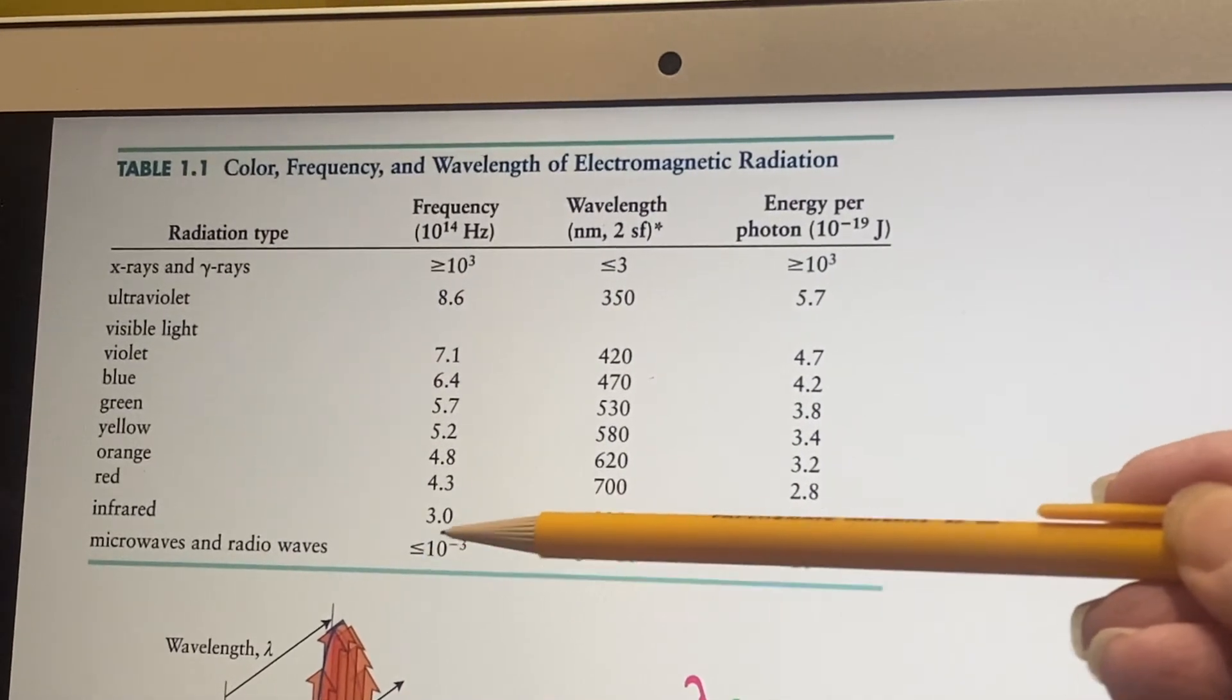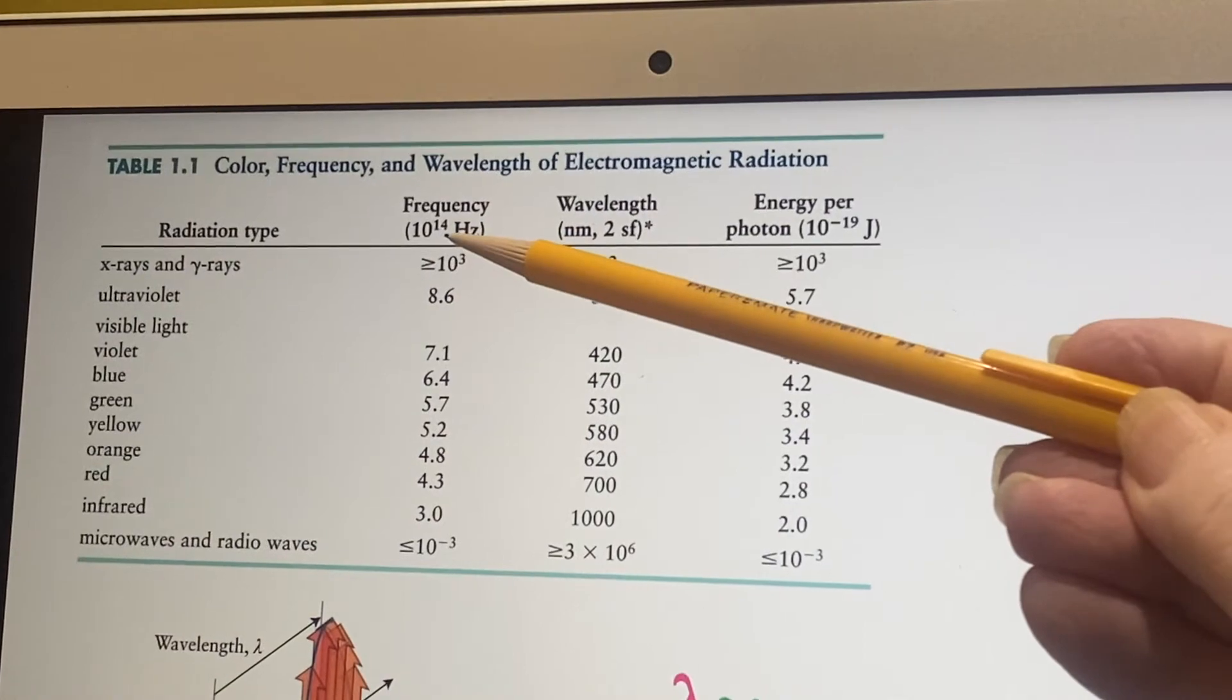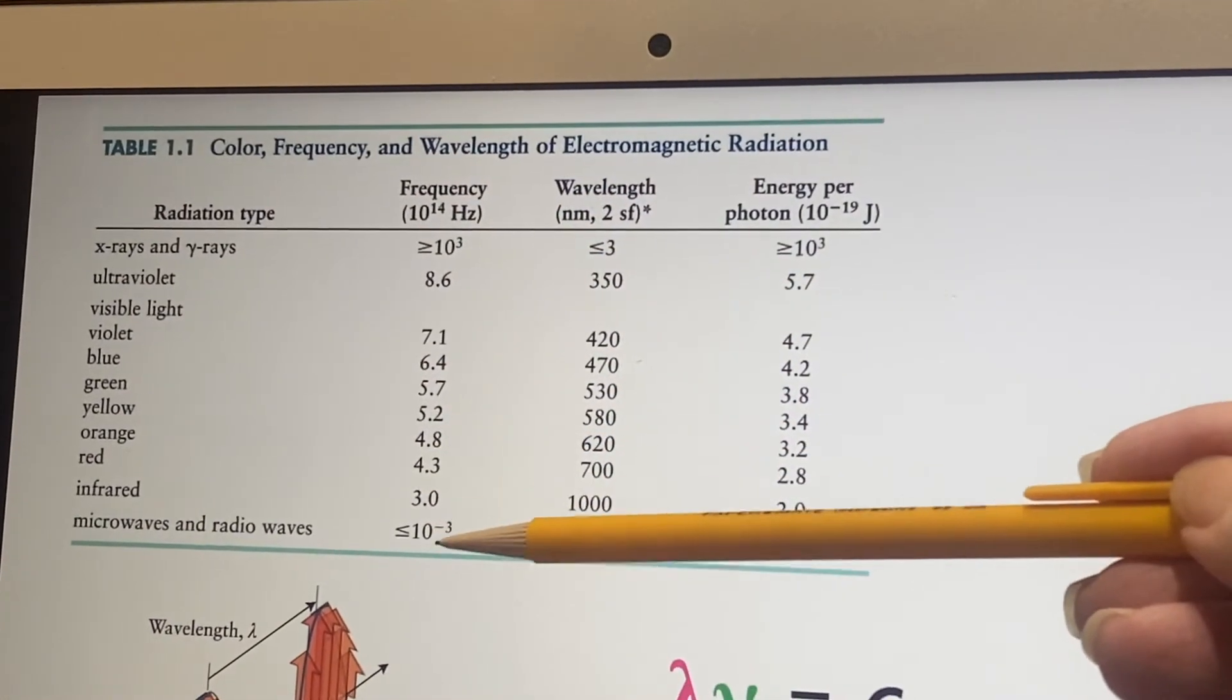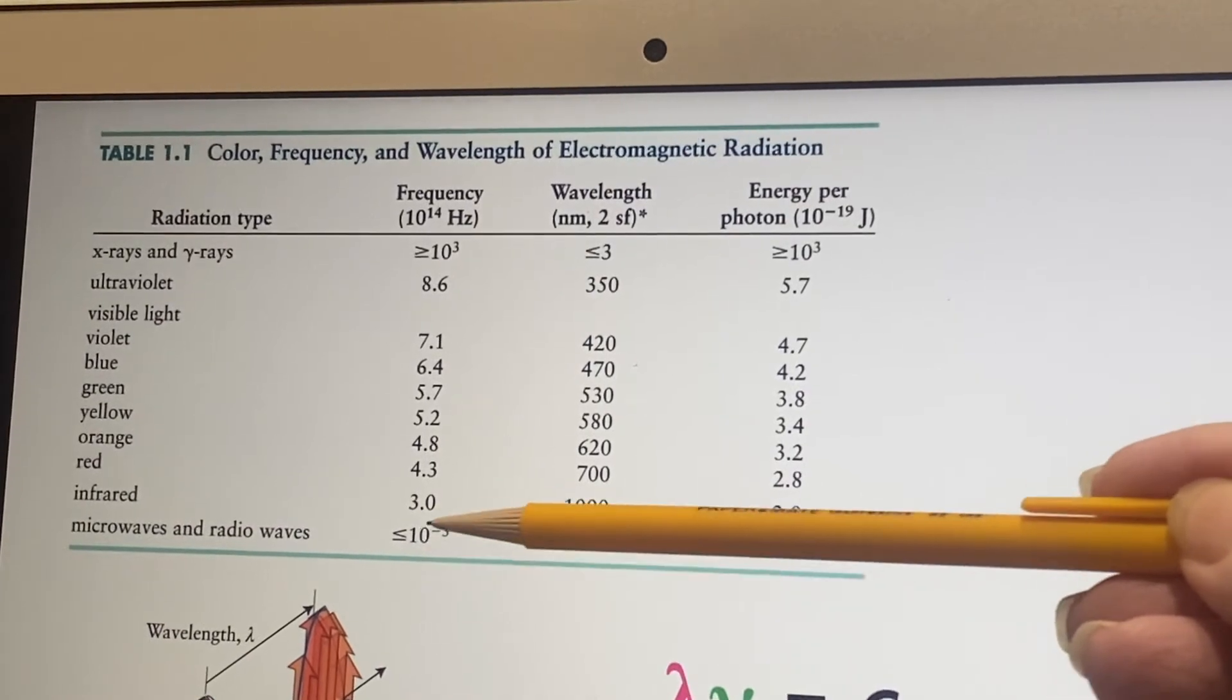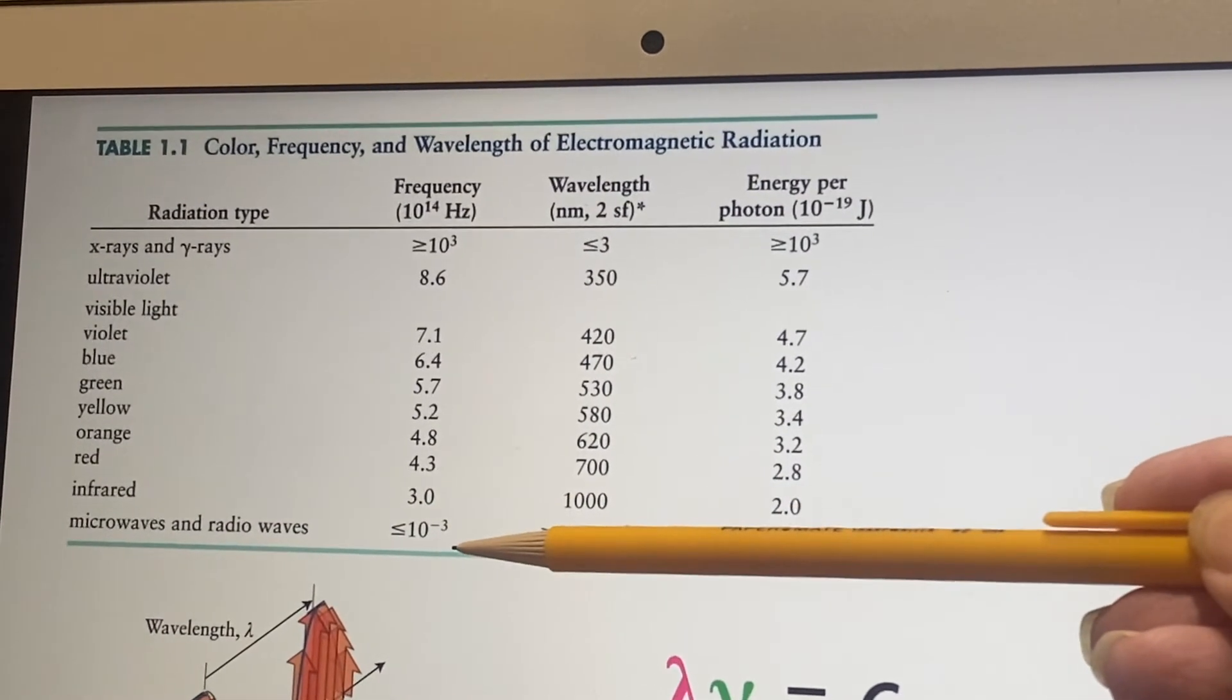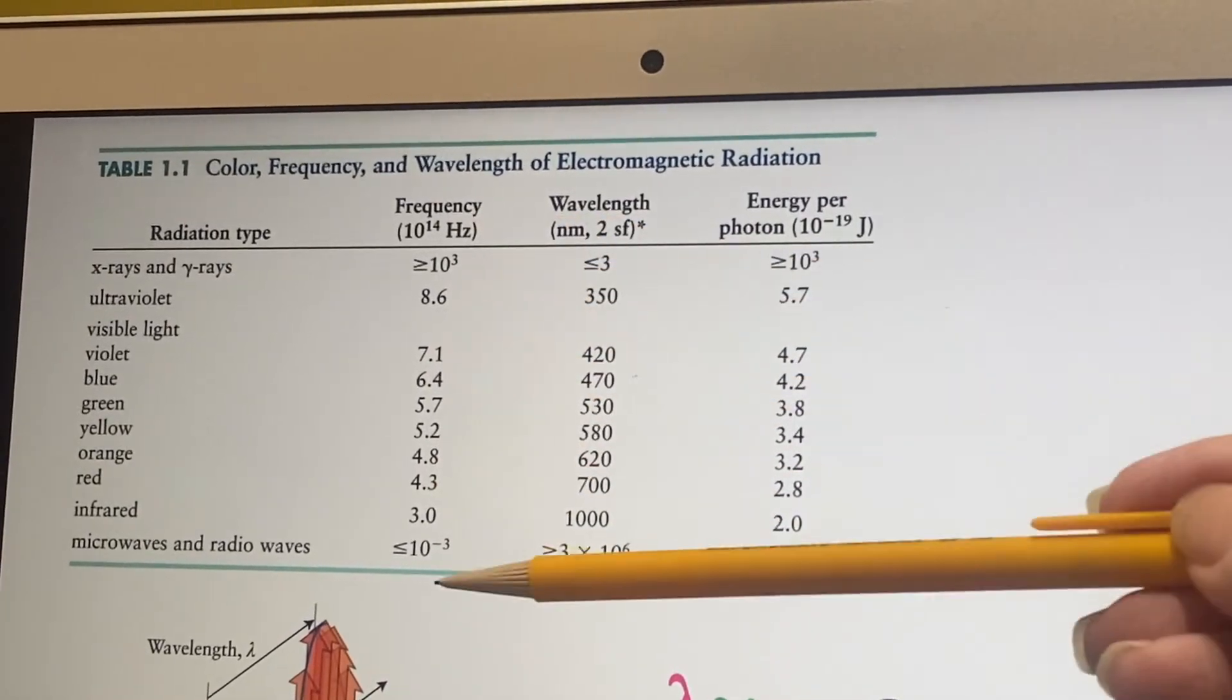And down here, it's less than, right? It's 10 to the negative 3rd. We'll multiply that by 10 to the 14th and we'll get 10 to the 11th. So waves that are less than 10 to the 11th Hertz. All right. So that helps unpack how weirdly they wrote this.